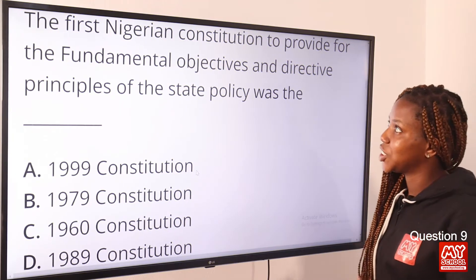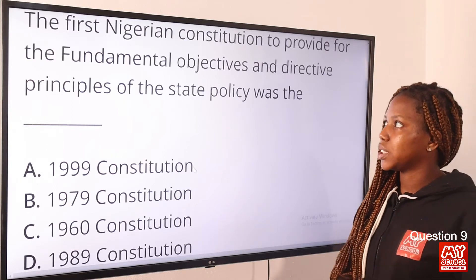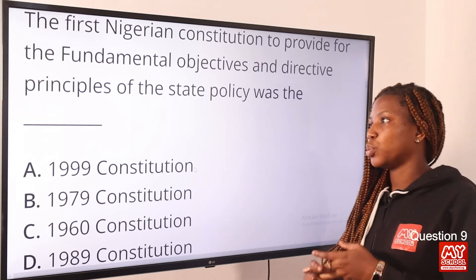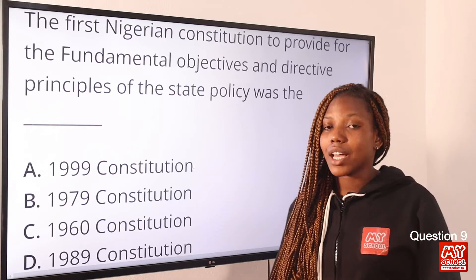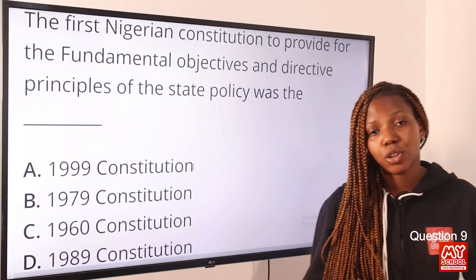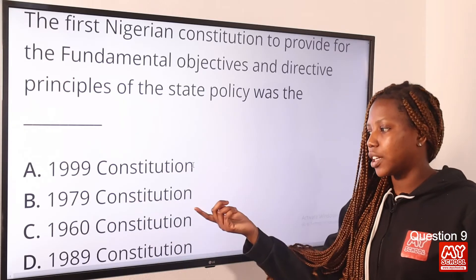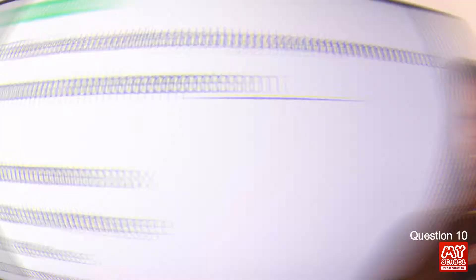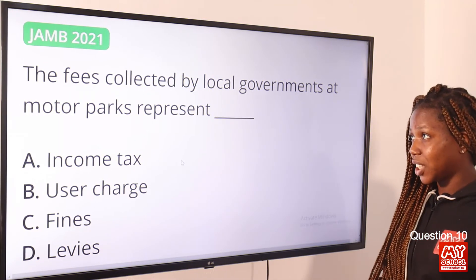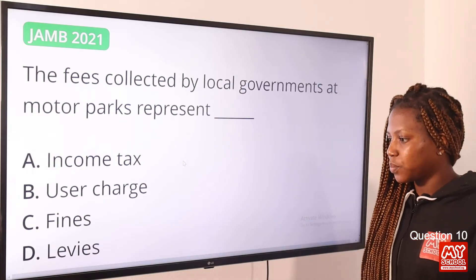Question nine: The first Nigerian constitution to provide for the fundamental objectives and directive principles of state policy was — the answer is the Second Republic constitution, which is the 1979 Constitution. Option B is the correct answer.